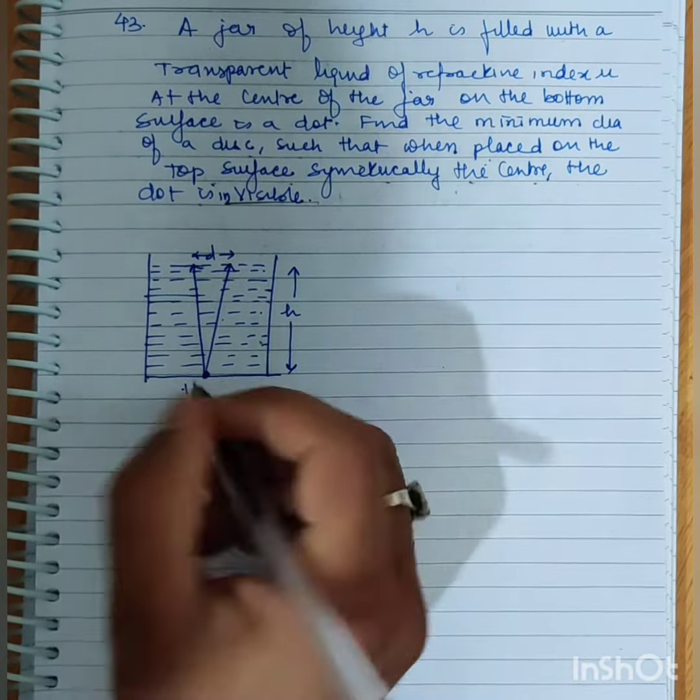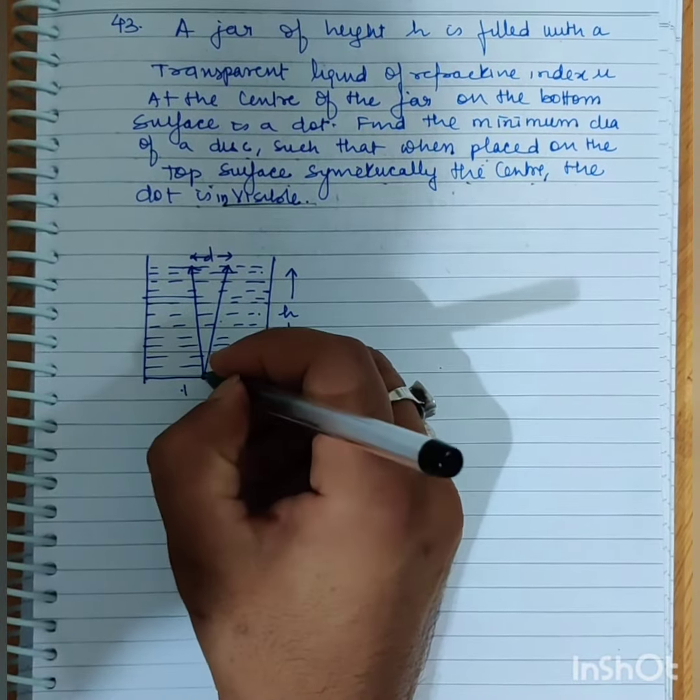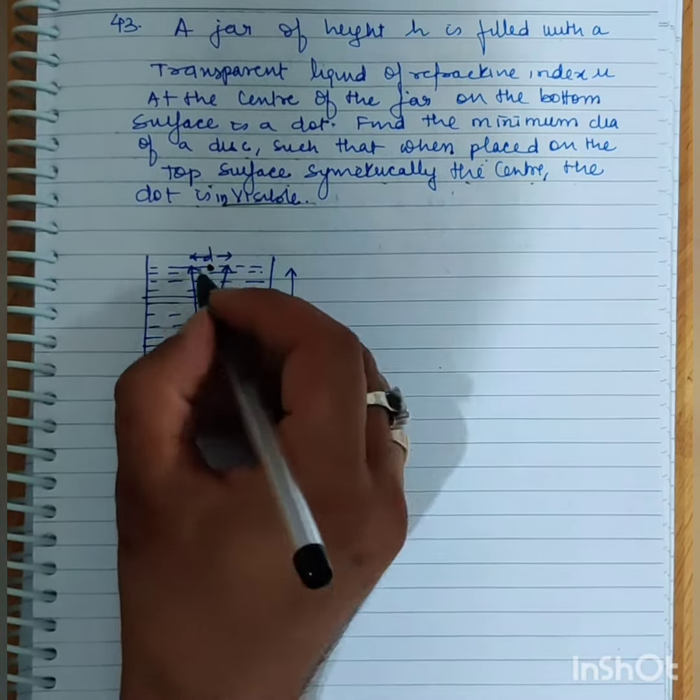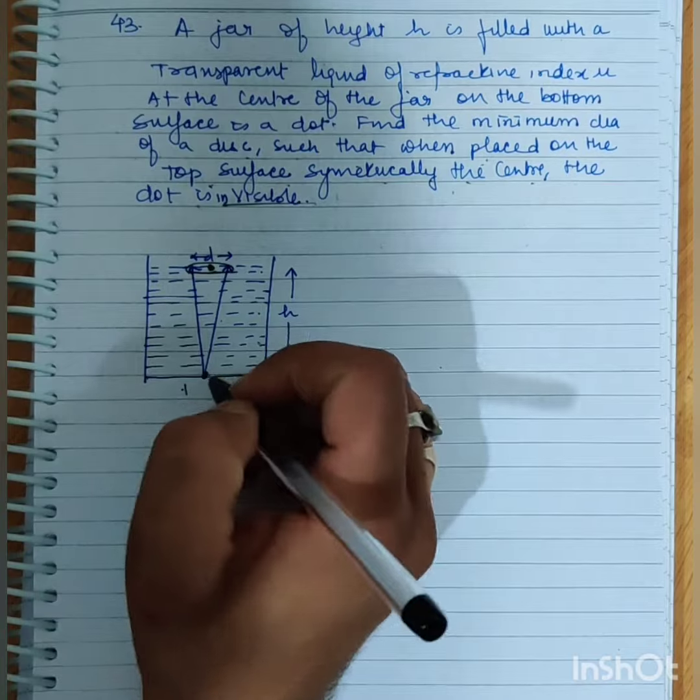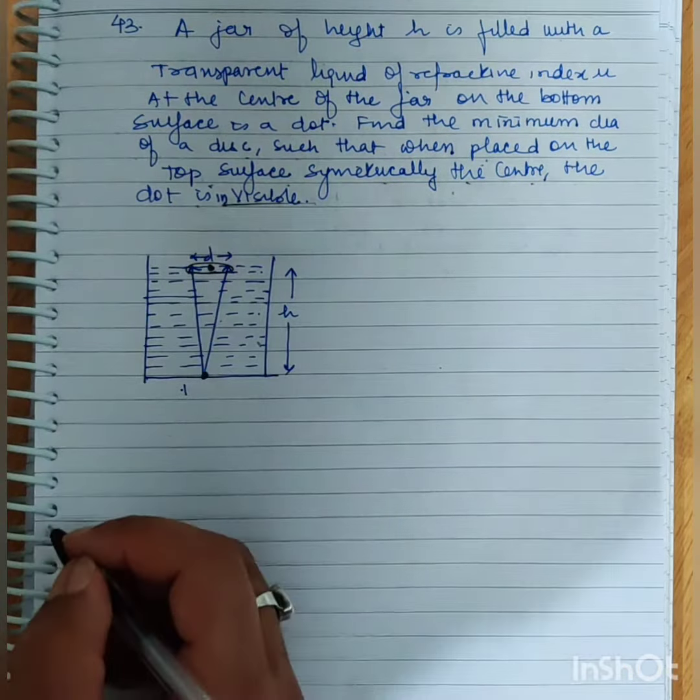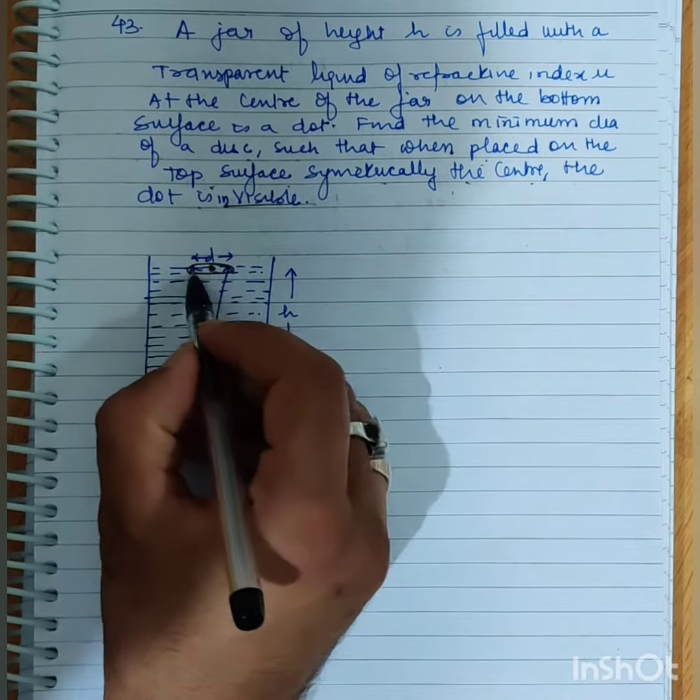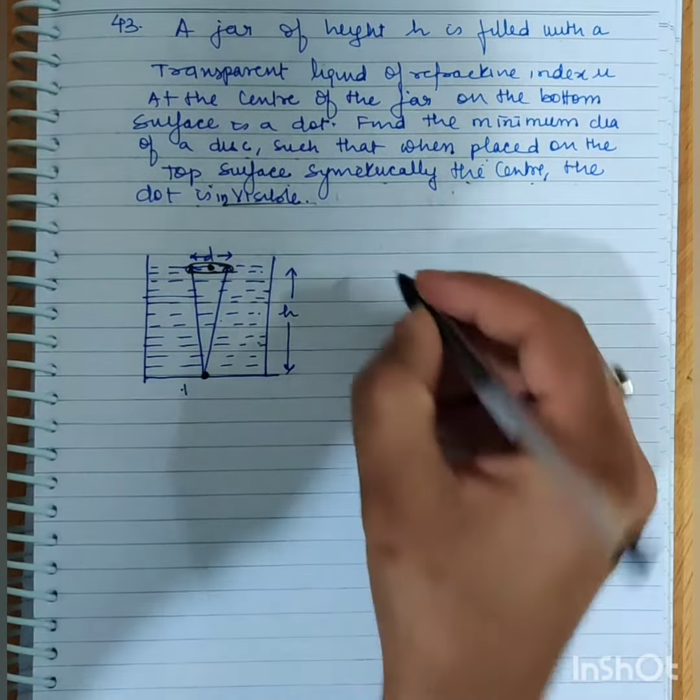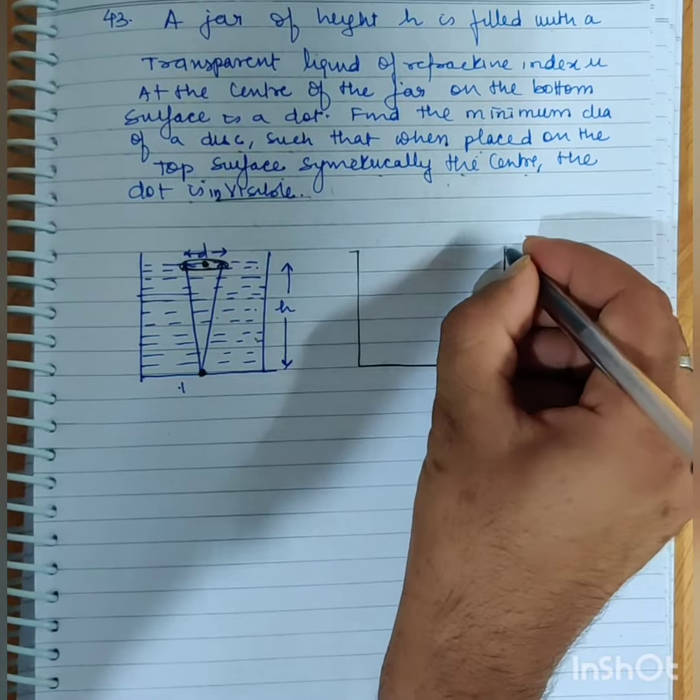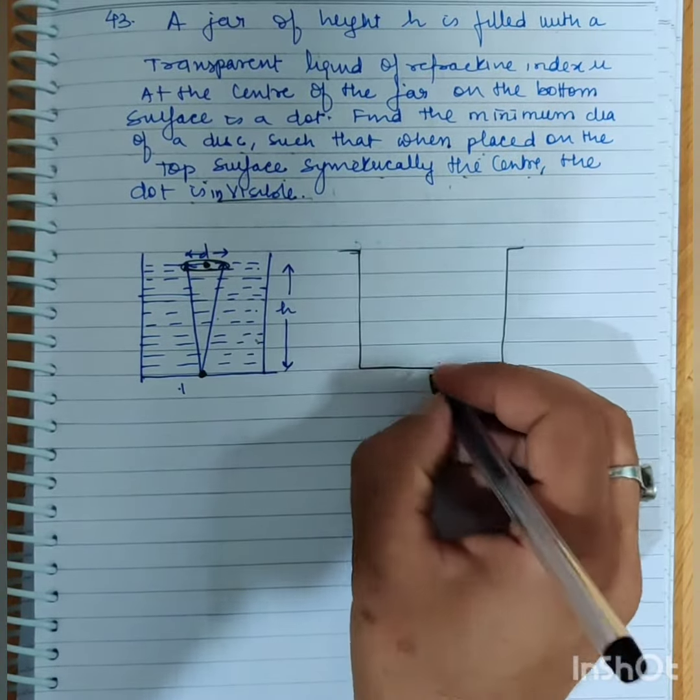So, the dot is at the center on the bottom. What diameter should the disc have? The dot can be seen when light comes out from the dot.